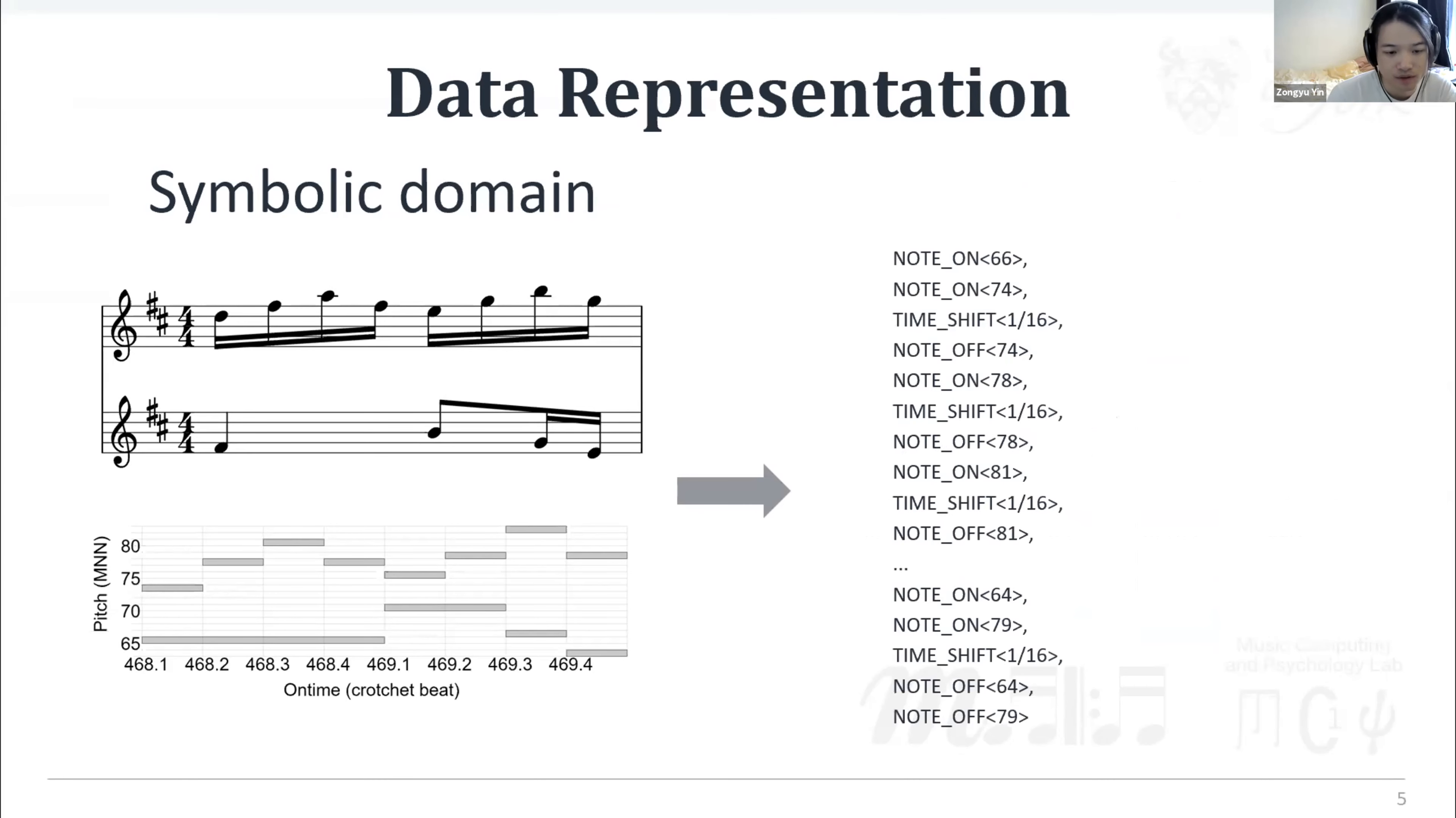Music generation models often use different types of data representation. For Music Transformer, which will be discussed later, it decomposes the note points into a sequence of note events. By going through the time axis from left to right, it begins with the note-on events for the first two notes, and then shifts the time with the duration of the shorter note, reaches the nearest note-off events. By applying the same principle, we can get a sequence of note events for the same piece on the left.